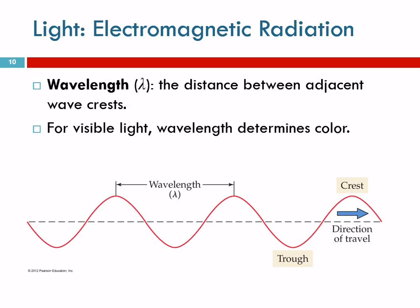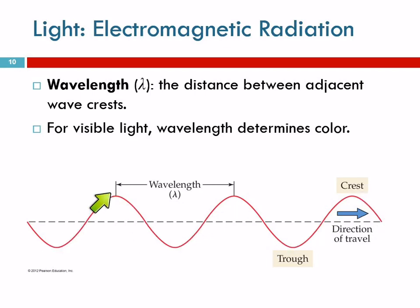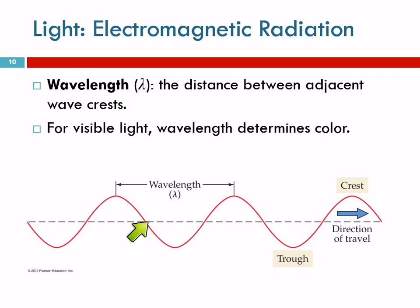We can characterize waves. One important characteristic is the wavelength. Here we have an illustration of a wave — a sine wave — and this is the sort of wave that electromagnetic radiation is. The wavelength is the length of the wave, measured from one peak or crest to another crest. You could measure it from trough to trough. It's the length of a wave, and how long that wave is affects how it behaves and how we perceive it.